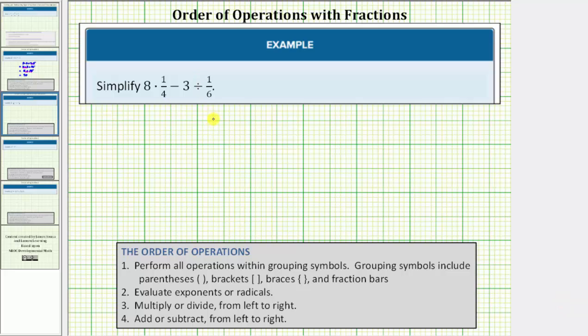We want to simplify the expression eight times one-fourth minus three divided by one-sixth. To simplify the expression we must follow the order of operations where step one,